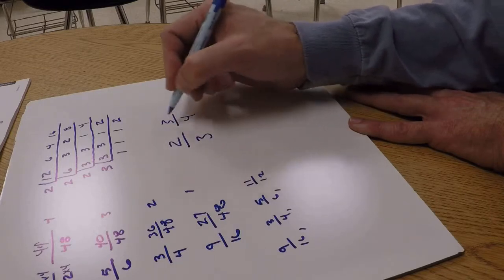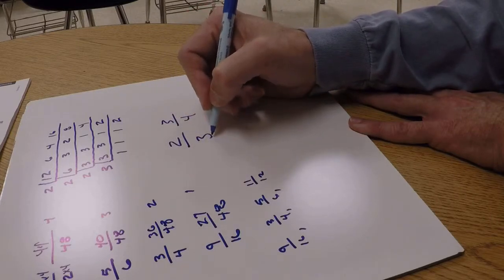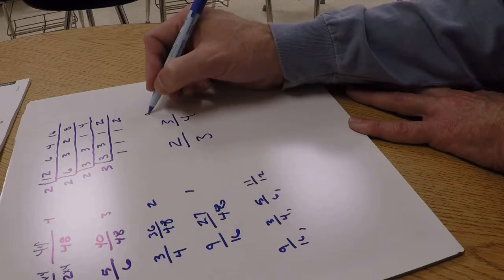Just multiply crossways here. This denominator times that numerator. 3 times 3 is 9, and 4 times 2 is 8.